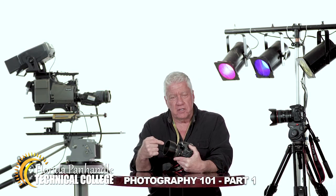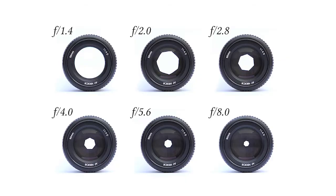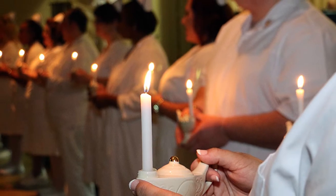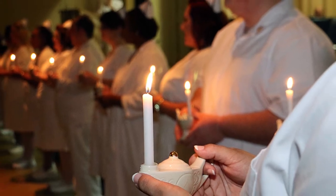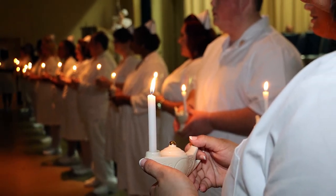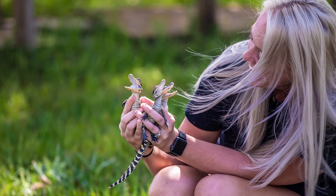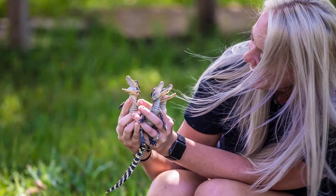Your aperture is the size of the opening in the lens which allows light to hit your sensor. A wide open aperture allows more light, helping in low light conditions, and also affecting the camera's depth of field — giving photos a creamy, blurry background, also known as bokeh.